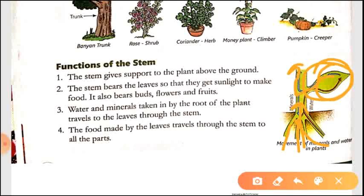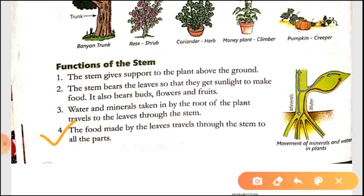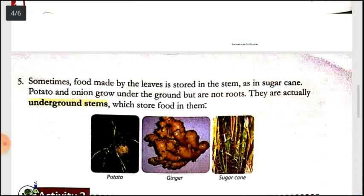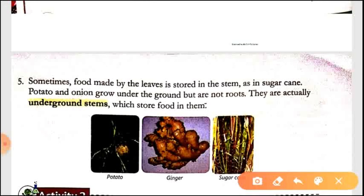The food made by the leaves travels through the stem to all the parts of the plant. Water, minerals and food are transported from one place to another with the help of the stem. Sometimes the food made by the leaves is stored in the stem, as in sugarcane.